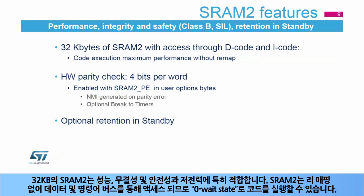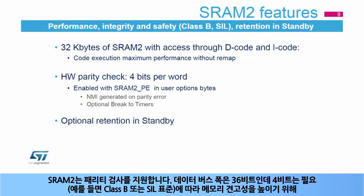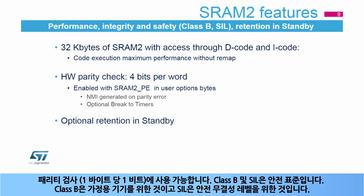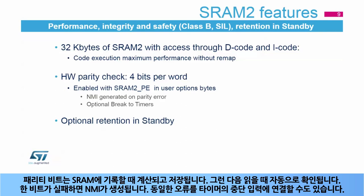The 32 kilobytes of SRAM2 is particularly suitable for performance, integrity, safety, and low power. SRAM2 is accessed through the data and instruction buses without any remapping, enabling code execution at zero wait states. SRAM2 supports parity check — the data bus width is 36 bits because four parity bits are available, one bit per byte, to increase memory robustness as required by Class B or SIL safety standards. The parity bits are computed and stored when writing into SRAM, then automatically checked when reading. If one bit fails, an NMI is generated, and the same error can also be linked to the break input of the timers. Note that SRAM2 parity check is disabled by default.